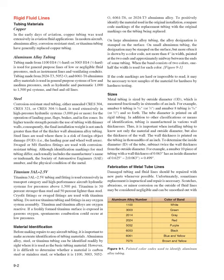Corrosion-resistant steel tubing, either annealed CRES 304, CRES 321, or CRES 304 1/8-hard, is used extensively in high-pressure hydraulic systems (3,000 psi or more) for the operation of landing gear, flaps, brakes, and in fire zones. Its higher tensile strength permits the use of tubing with thinner walls. Consequently, the final installation weight is not much greater than that of the thicker-wall aluminum alloy tubing. Steel lines are used where there is a risk of foreign object damage (FOD), i.e., the landing gear and wheel well areas.